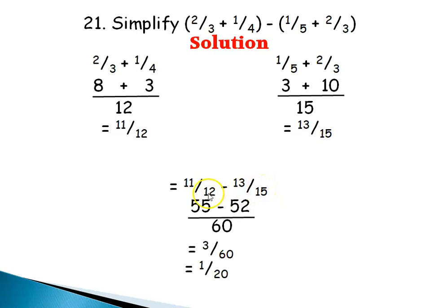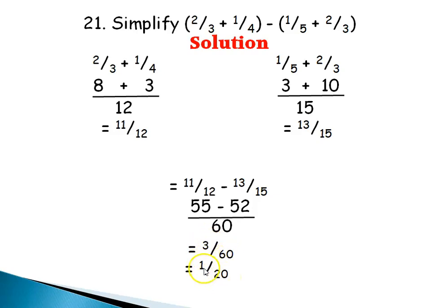The LCM of 12 and 15 is 60. 12 into 60 is 5; 5 times 11 is 55. 15 into 60 is 4; 4 times 13 is 52. 55 minus 52 is 3, giving 3/60. Simplifying, 3/60 reduces to 1/20. So 1/20 is the final answer.